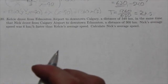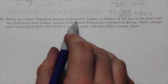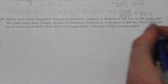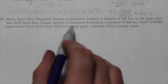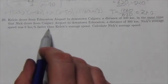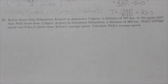All right, question 20. Kelsey drove from Edmonton Airport to downtown Calgary, a distance of 340 kilometers, in the same time that Nick drove from Calgary Airport to downtown Edmonton, a distance of 360 kilometers. Nick's average speed was six kilometers faster than Kelsey's. Calculate Nick's average speed.